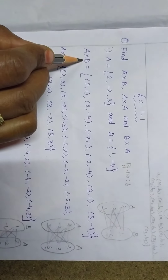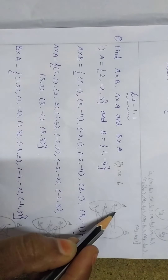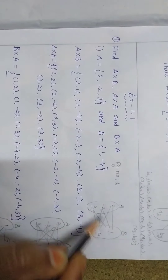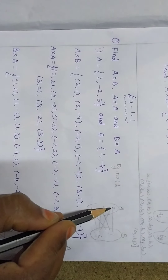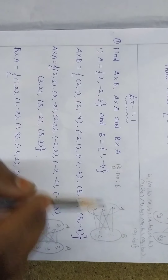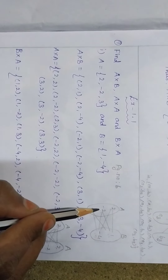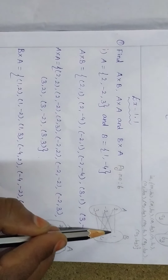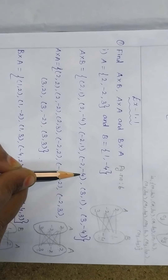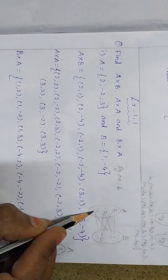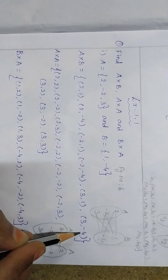Now we have to find A cross B. The set A has three elements and the set B has two elements. The element 2 is paired with 1 and -4, giving (2,1) and (2,-4). The element -2 is paired with 1 and -4, giving (-2,1) and (-2,-4). The element 3 is paired with 1 and -4, giving (3,1) and (3,-4).